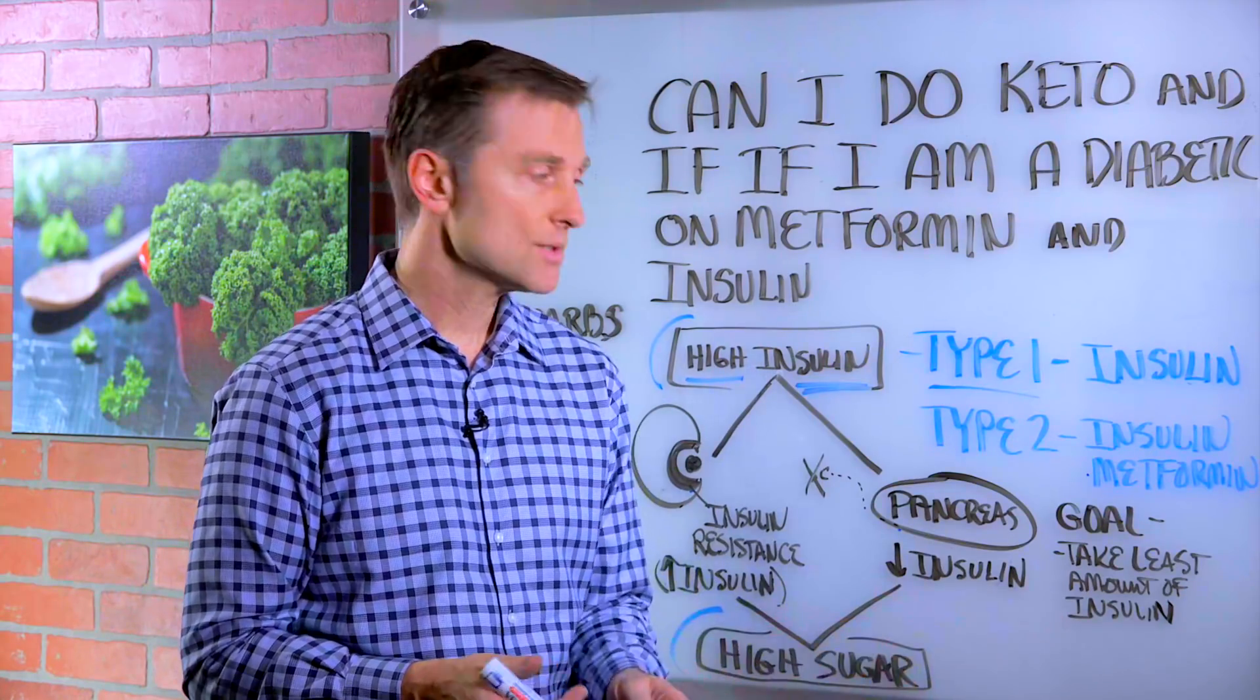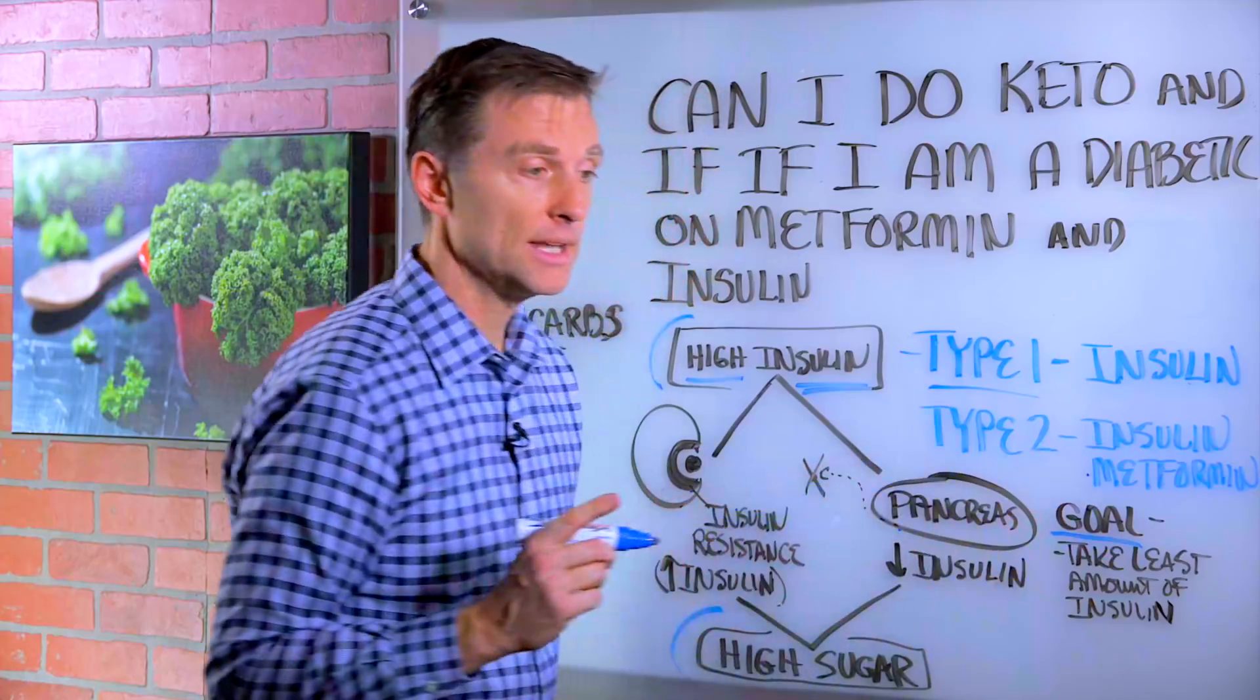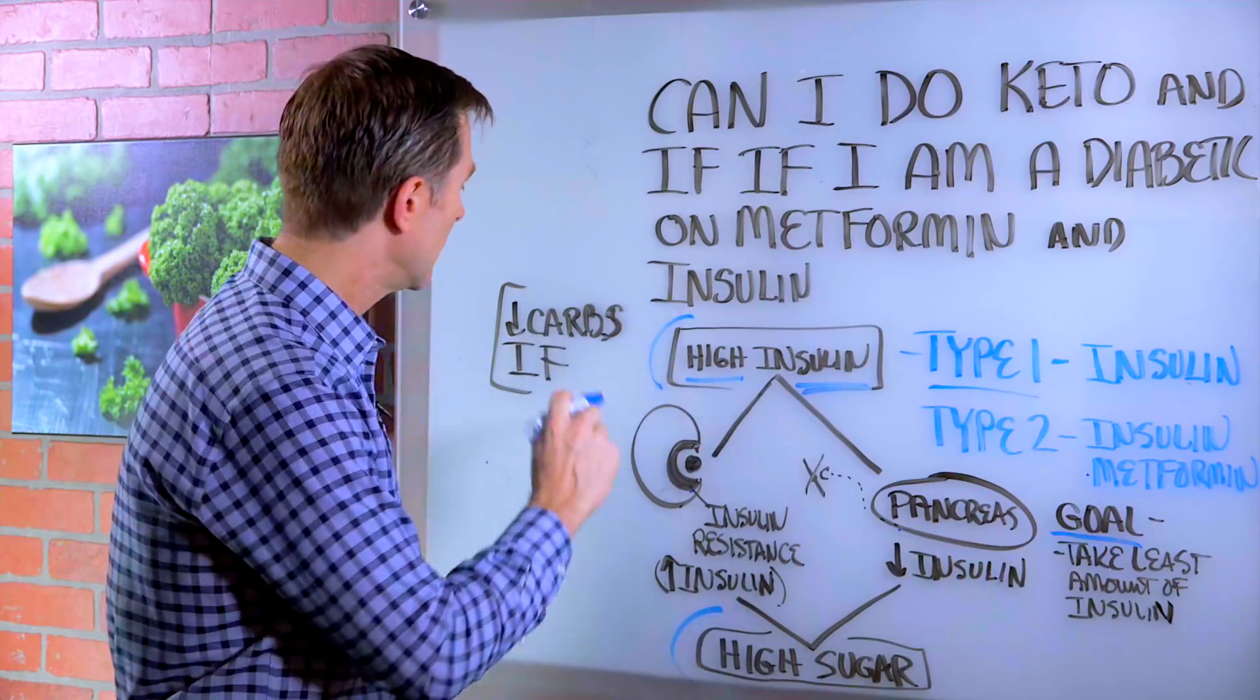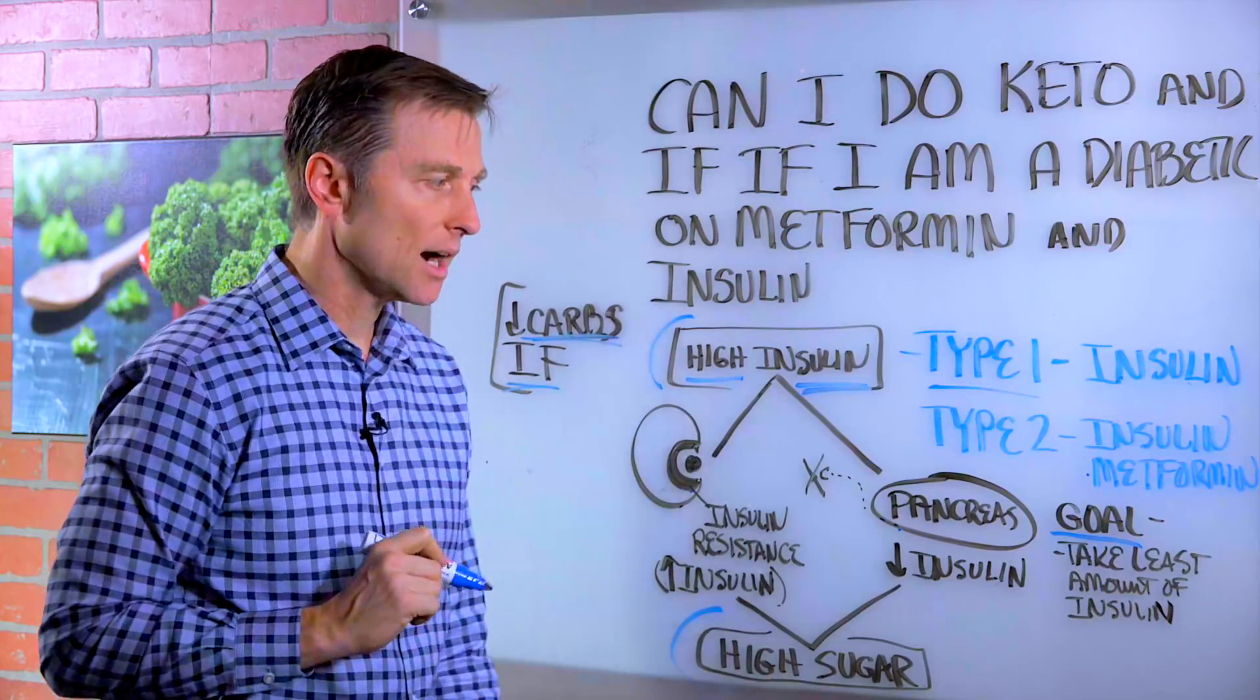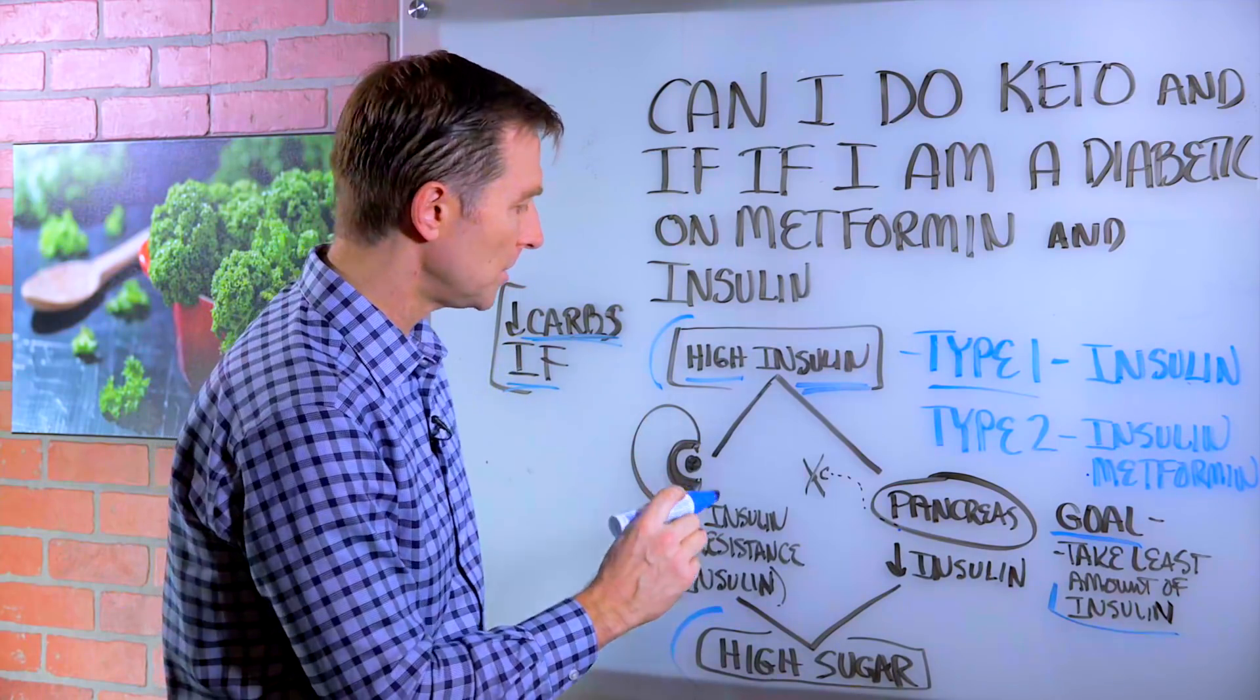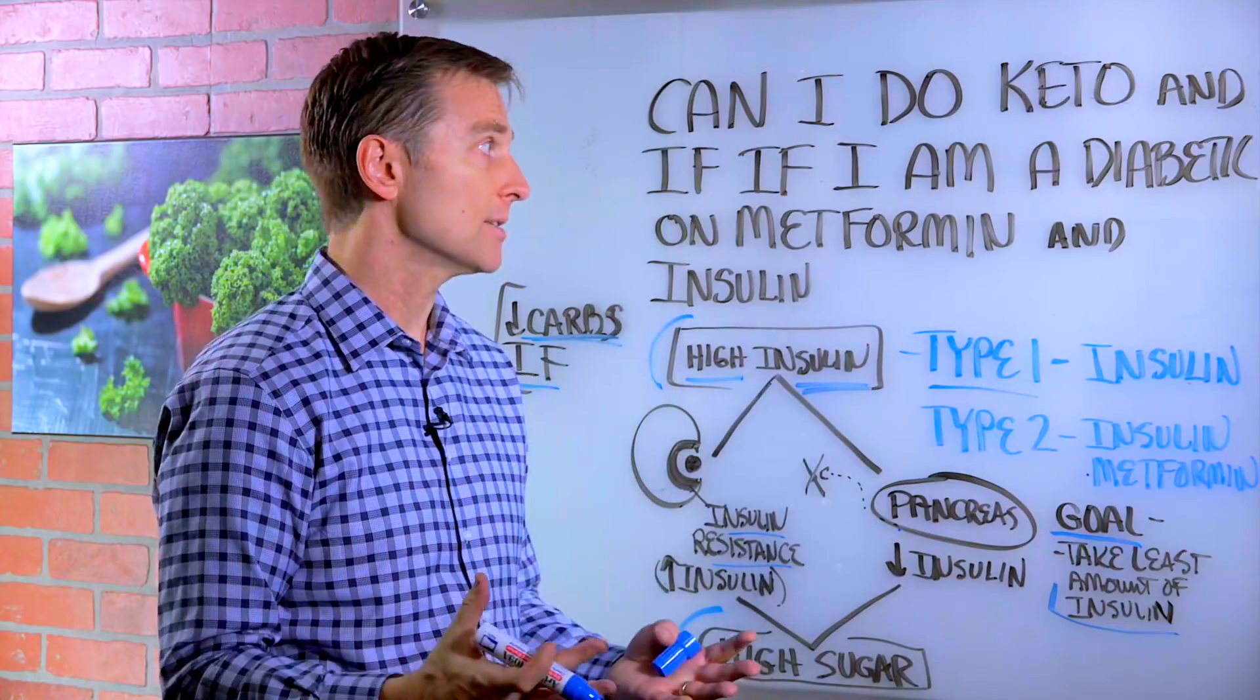Unfortunately, the American Diabetes Association does not recommend what I'm going to recommend, but there needs to be more focus on diet and frequency of eating because reducing your carbohydrates and doing intermittent fasting are the two things that will allow the person to take the least amount of insulin. It's also going to help improve insulin resistance, which will take the stress off the liver and the cells.